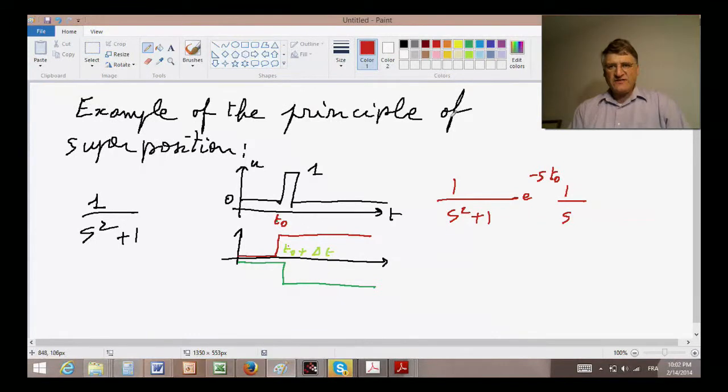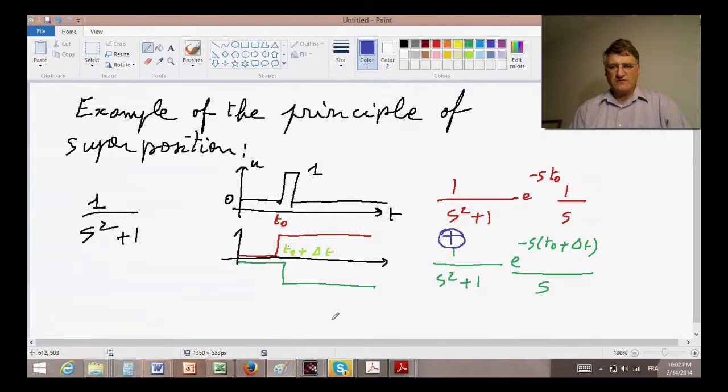Now what we could do is take this step and obtain the response. We first take the response to this step. Let's say it occurs at time t0, and this one occurs at time t0 plus delta t. We know that for the first one, the response would be 1 over s squared plus 1 times the Laplace transform of a step, which would be e to the minus s times t0 times 1 over s. The next step going through the same system will have 1 over s squared plus 1 times e to the minus s times t0 plus delta t times 1 over s. When you take the sum of these two terms, you actually get the effect of this guy.